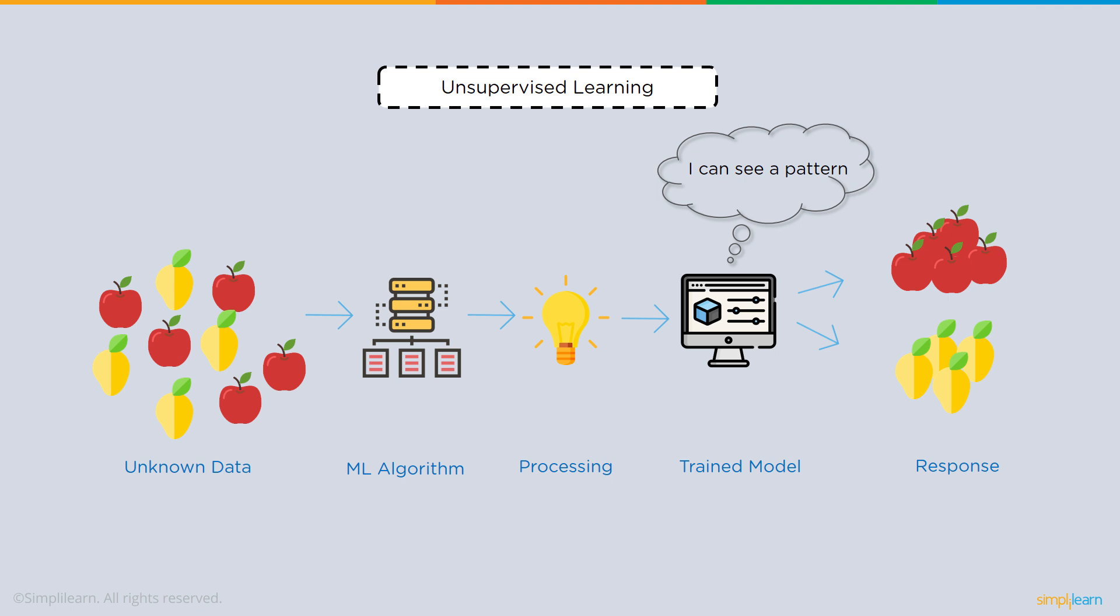The trained model says, can I see a pattern here? From that pattern it divides it up into a response—in this case apples and pears. You can see some of these things look just like the other and it tries to put them all together so that you get similar things in similar groups.